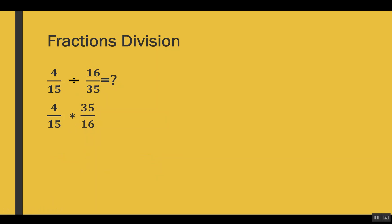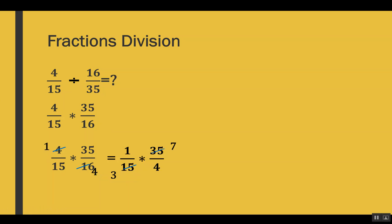I will use the simplification first method. We divide by common factors: 4 and 16 have the common factor 4, so after dividing we get 1 in the numerator and 4 in the denominator. Our new fractions are 1 out of 15 and 35 out of 4. We can simplify again because 5 is a common factor. After dividing we have a new set of numerators and denominators that can't be cut further.